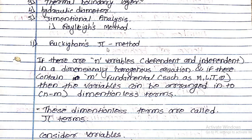For revision purposes, I am taking this as the first point to cover in this video lecture. We know that in Rayleigh's method we cannot use more than four independent variables, and there are drawbacks — we cannot form dimensionless numbers using Rayleigh's method. To overcome these drawbacks, we are going for the Buckingham Pi theorem.